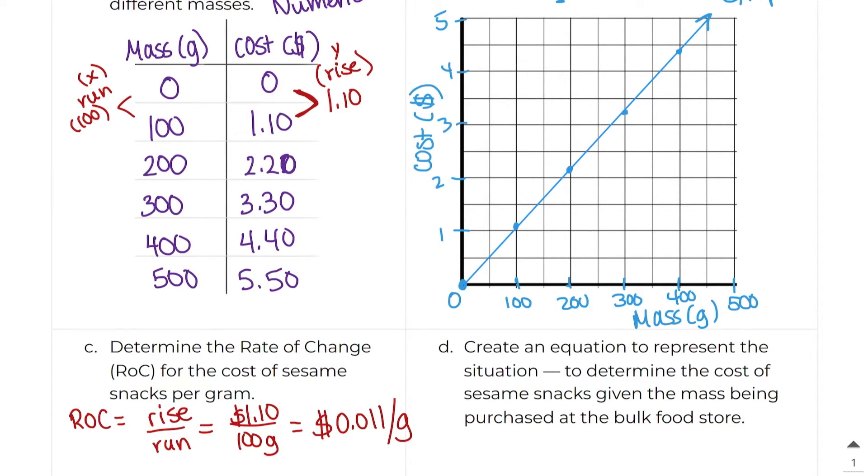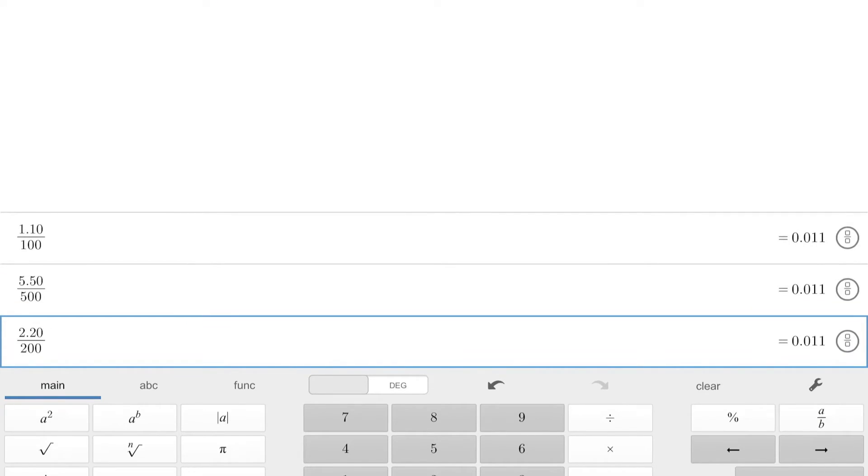Another option is to do rise over run using your graph right here. So I could also just choose a starting point. So I can start here and end here. And I know that the rise went up by $2.20 because this up here is $4.40 and this down here is $2.20. And when I do $4.40 minus $2.20, I get $2.20. So we know that the rise is $2.20. And then the run, we know the run goes from 200 to 400. Right here is 200, right here is 400. So 400 minus 200 is equal to 200 grams. So to do this, I would just do $2.20 divided by 200.